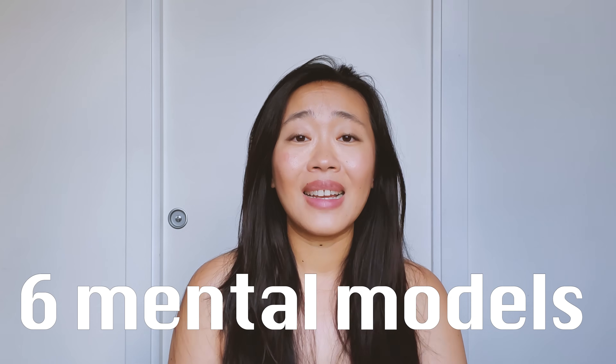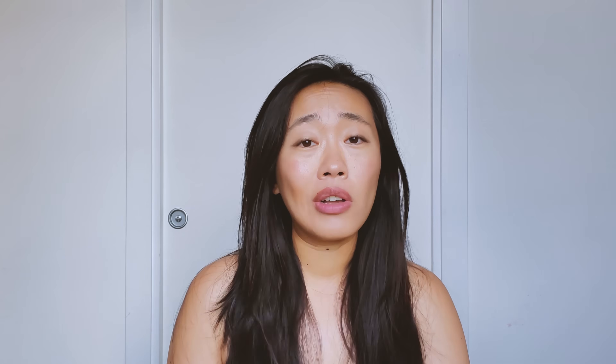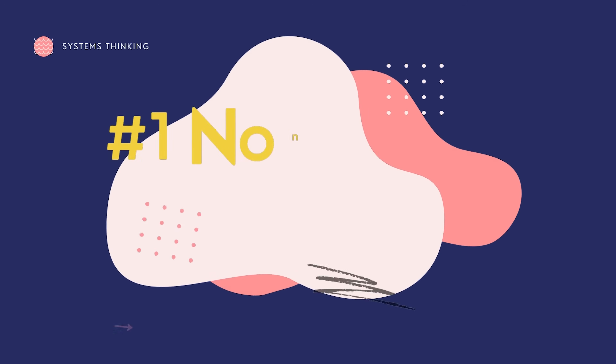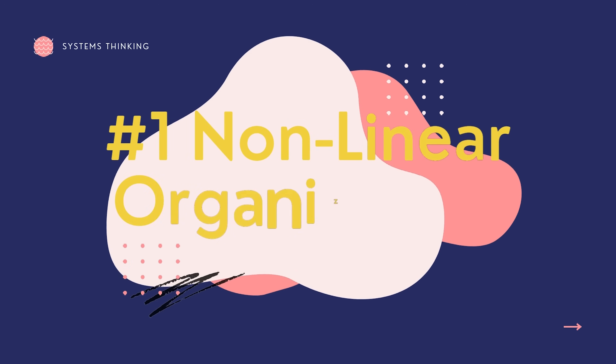We'll use six mental models to understand the problem as a whole, as well as identify the cause and not just treat the symptoms. Hi everyone, it's Vicky. If you're new here, I talk about clear thinking and clear communications through frameworks and mental models. Today we'll kick start these six mental models in systems thinking with the first one: linear versus non-linear organization.